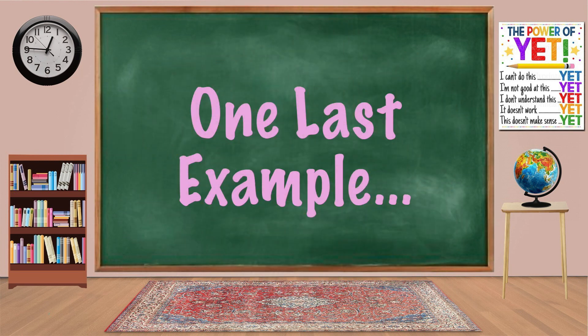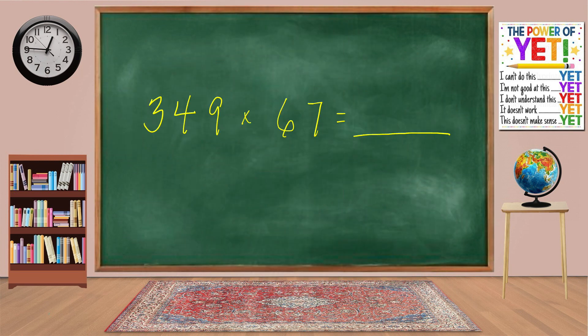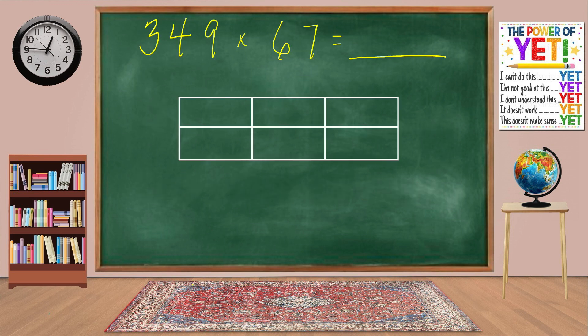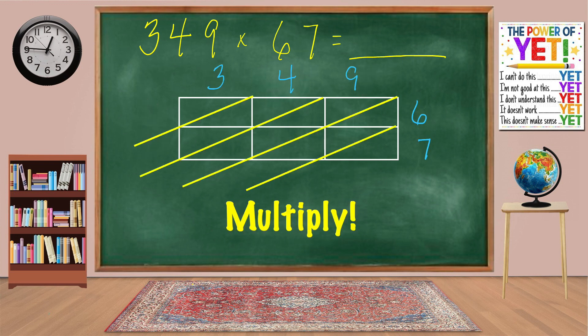One last example. What is 349 times 67? Let's follow our steps. Set up our lattice. This time we'll have 2 rows and 3 columns. Draw our diagonals. Copy the factors. Multiply. 6 times 3 equals 18. 6 times 4 equals 24. 6 times 9 equals 54.